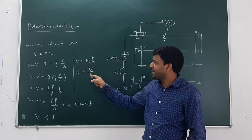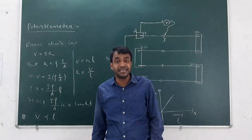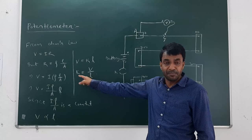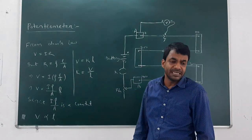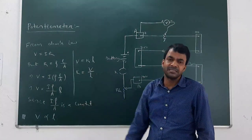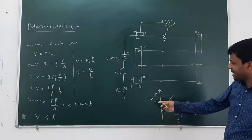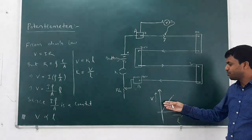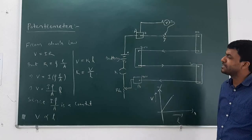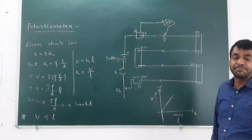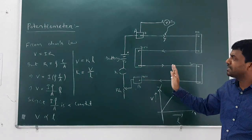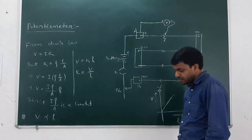Therefore K can be written as V/L, which is known as the potential gradient, or potential per unit length. The SI unit of K is volt per meter. If we draw a graph taking L on the X-axis and potential V on the Y-axis, a straight line will be obtained, because V is directly proportional to L. This is the principle of the potentiometer.